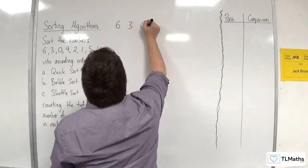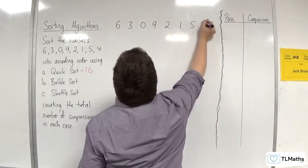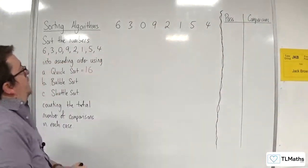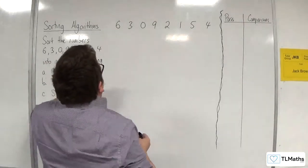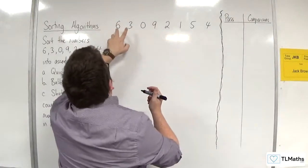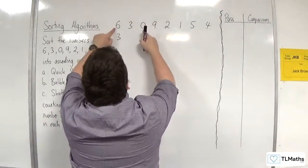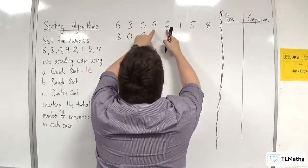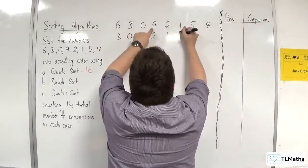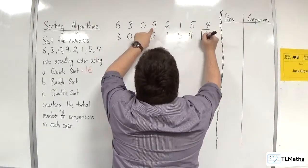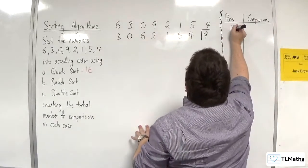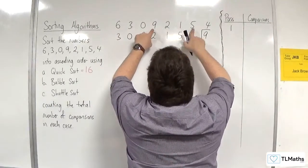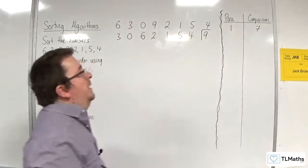So we've got 6, 3, 0, 9, 2, 1, 5, 4, and we're now going to use the bubble sort. In the first pass, starting with 6 and 3: 6 is larger than 3, so they get swapped. 6 is larger than 0, so they get swapped. 6 is not larger than 9, so 6 stays. 9 is larger than 2, 1, 5, and 4 — 9 bubbles to the top. So 7 comparisons in the first pass.